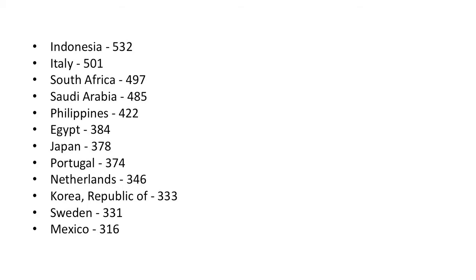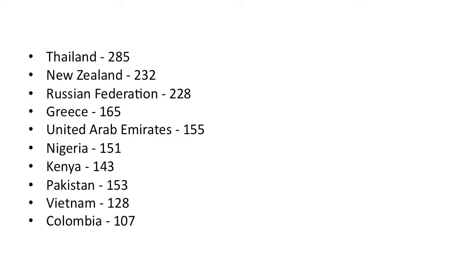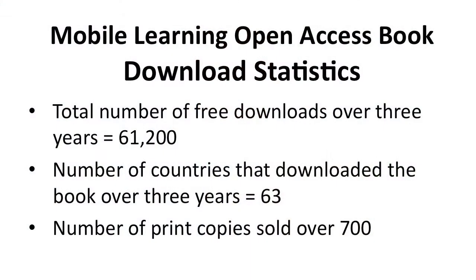South Africa had 497 downloads, Thailand 285, Nigeria 151, and Kenya 143. As you can see, people from both developed and developing countries downloaded the resources for free. Over three years, there were about 61,000 downloads across 63 different countries, and at the same time 700 printed copies were sold. So it seems the download of the free resources does not affect the sale of printed copies. If you have your materials available as open resources, people will download and use them — especially people in developing countries who can't afford expensive textbooks.